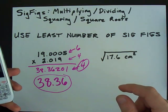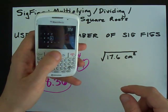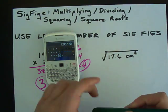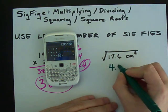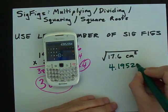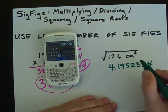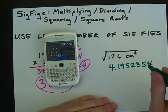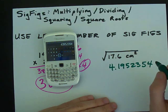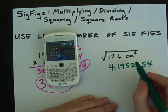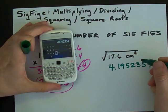of 17.6, which I'm doing on my Blackberry calculator right now, I get 4.19523554. If you give your teacher that answer, they are going to mark you, well, half wrong, because you got the right number but it's not the right number of significant digits.